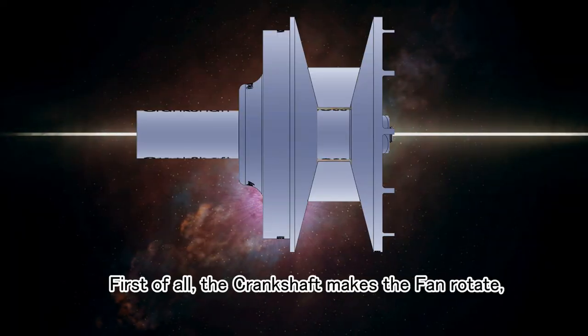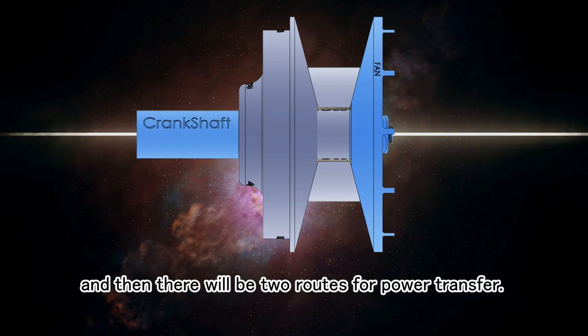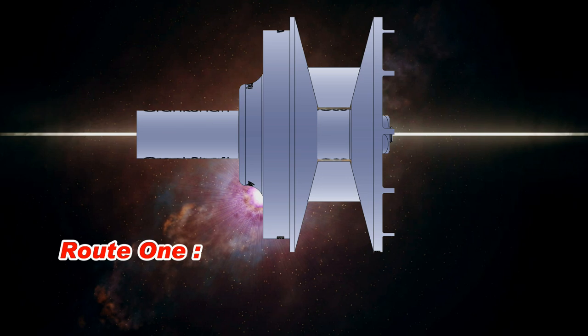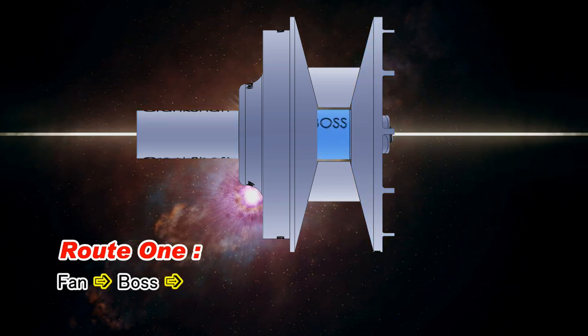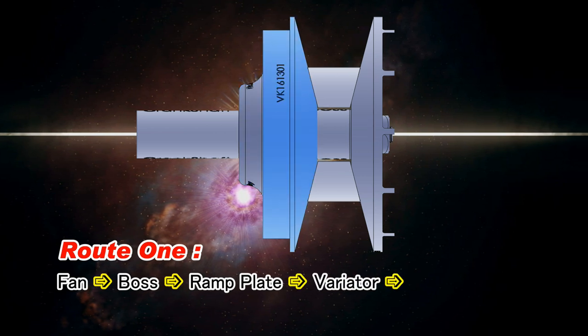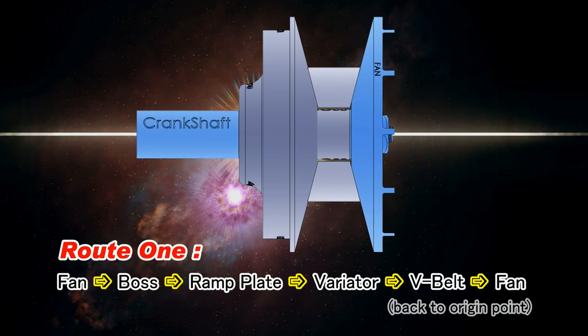First of all, the crankshaft makes the fan rotate, and then there will be two routes for power transfer. Route one: fan, back to origin point.